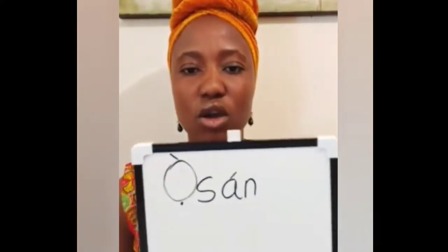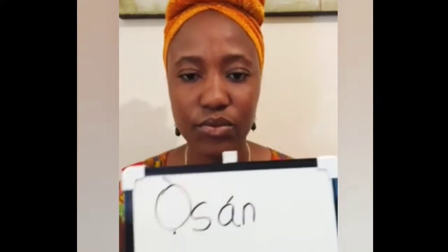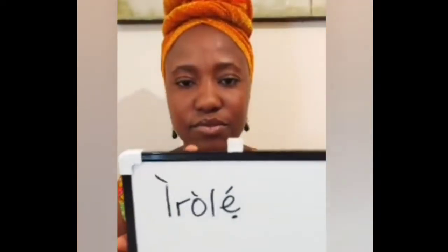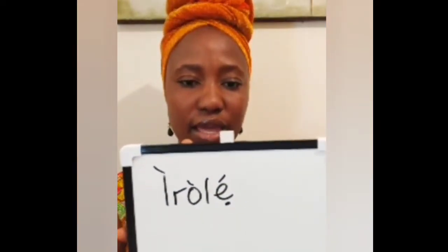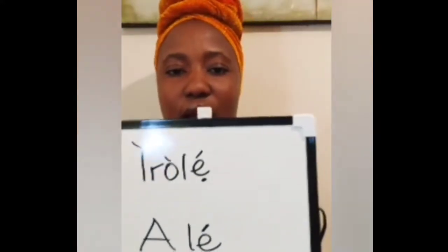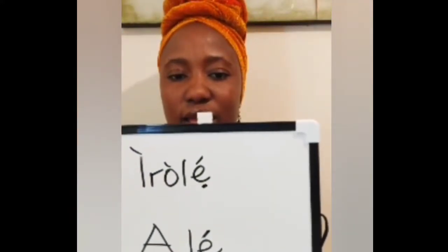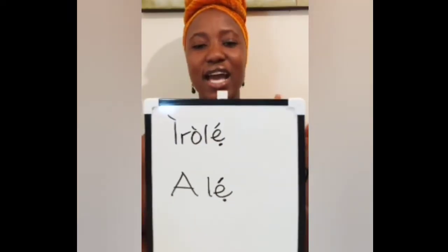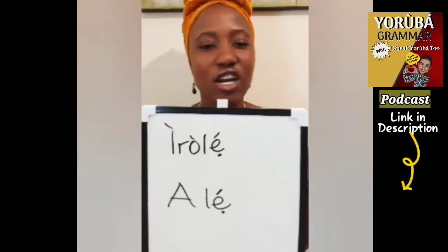The next time of the day that we commonly use is evening — IROLE: I-R-O-L-E. IROLE, that is evening. And the next common one is at night, written A-L-E. So these are the four common greeting times in Yoruba: morning, afternoon, evening, and night.